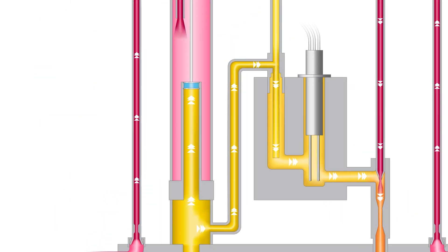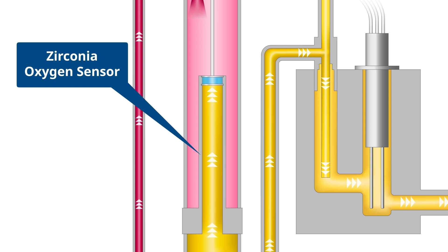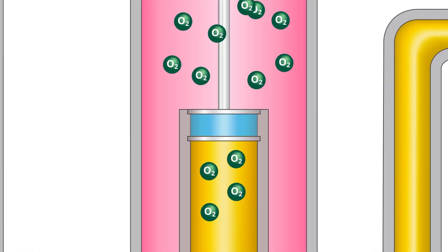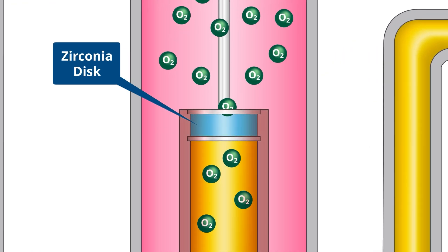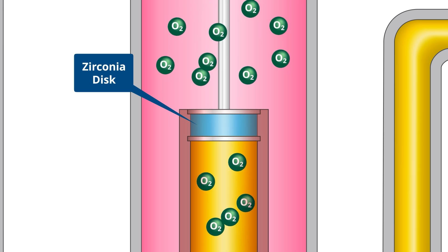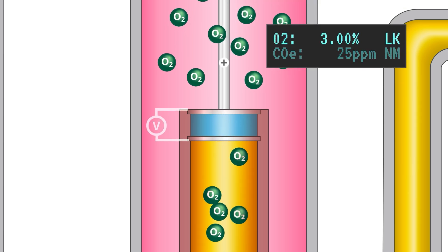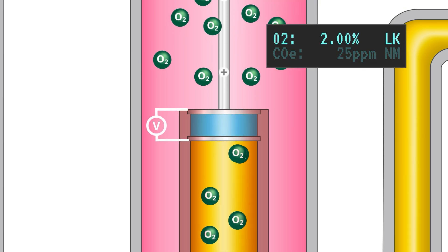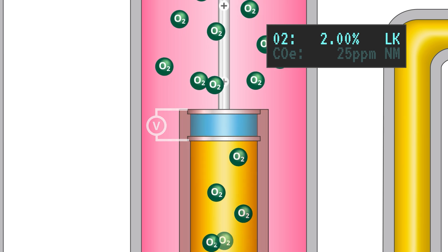The oxygen cell uses zirconia technology to measure excess oxygen. The zirconia cell is heated, which allows for the diffusion of oxygen ions through it. This diffusion creates a voltage potential across the cell that is correlated to excess oxygen present in the process exhaust gas.